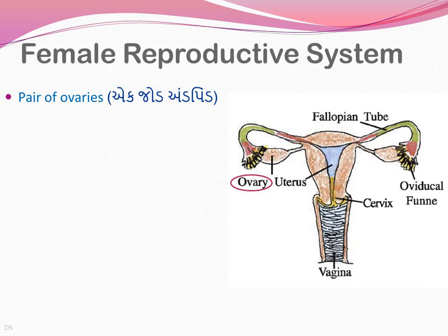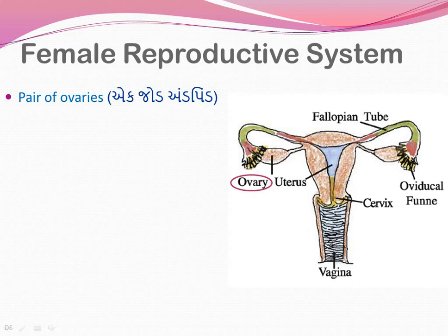Because gametogenesis occurs here, that's why ovaries are called the primary sex organ or gonad. In the case of female, if someone asks which is the gonad, the answer is ovaries. The location is fixed - it is not a movable structure. It is attached with the uterus as well as the region of the abdomen through a series of peritoneal ligaments. The peritoneal cavity has joined the ovary through these ligaments, fixing it in the lower abdominal cavity.